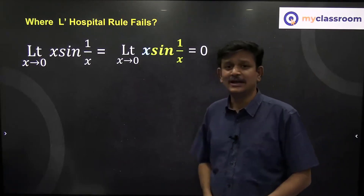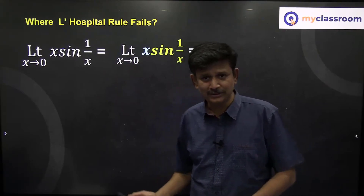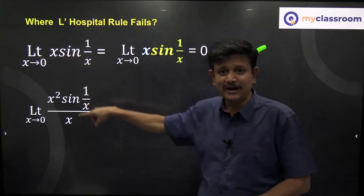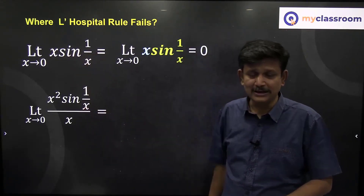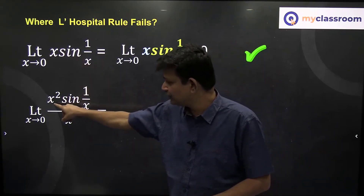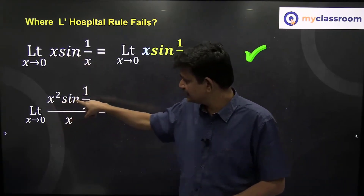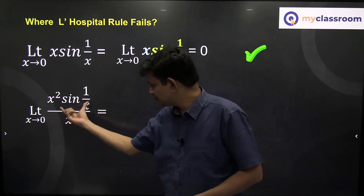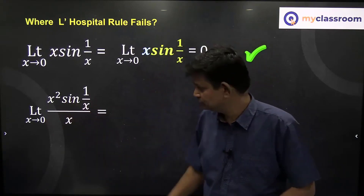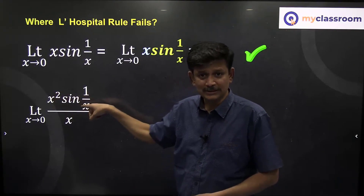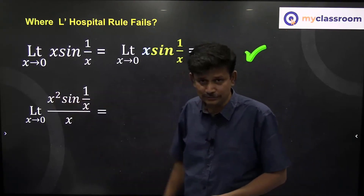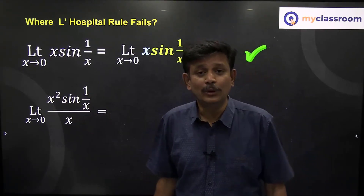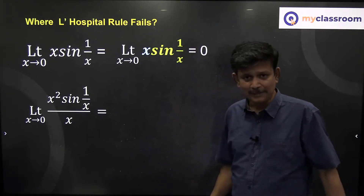This is not in 0/0 or ∞/∞ form directly. So to apply L'Hôpital's rule, I will multiply and divide by x, converting the limit to: limit as x→0 of x²·sin(1/x) / x. Now as x→0, the numerator x²·sin(1/x) approaches 0 (since x² is close to 0 times a bounded number), and the denominator x also approaches 0. This is 0/0 form, so now L'Hôpital's rule can be applied.